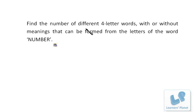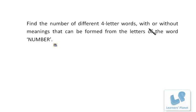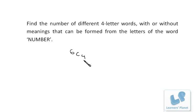Let's take this problem: find the number of different four-letter words, with or without meaning, that can be formed from the letters of the word NUMBER. Here we have six alphabets — one, two, three, four, five, six — and we have to make four-letter words only. So first of all, we have to make a selection. To make a four-letter word we need four alphabets, so out of six alphabets we are selecting four.